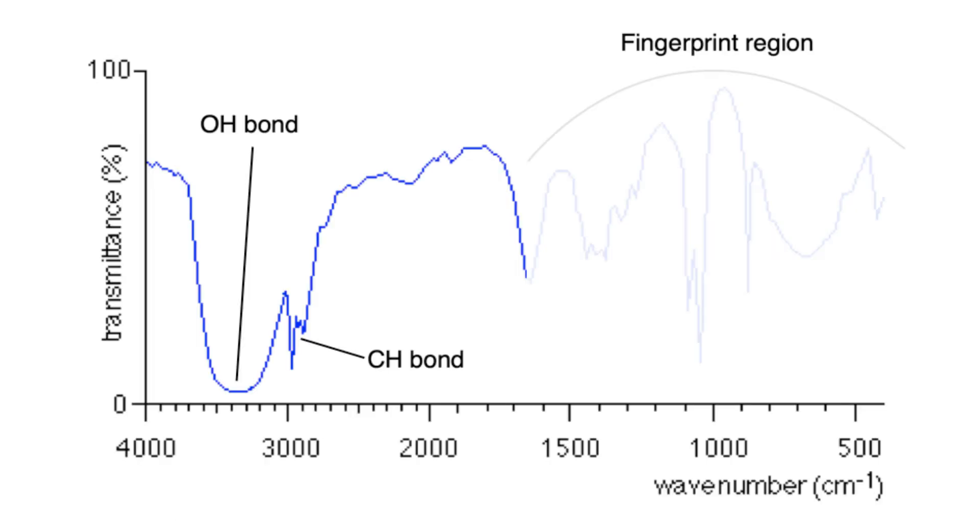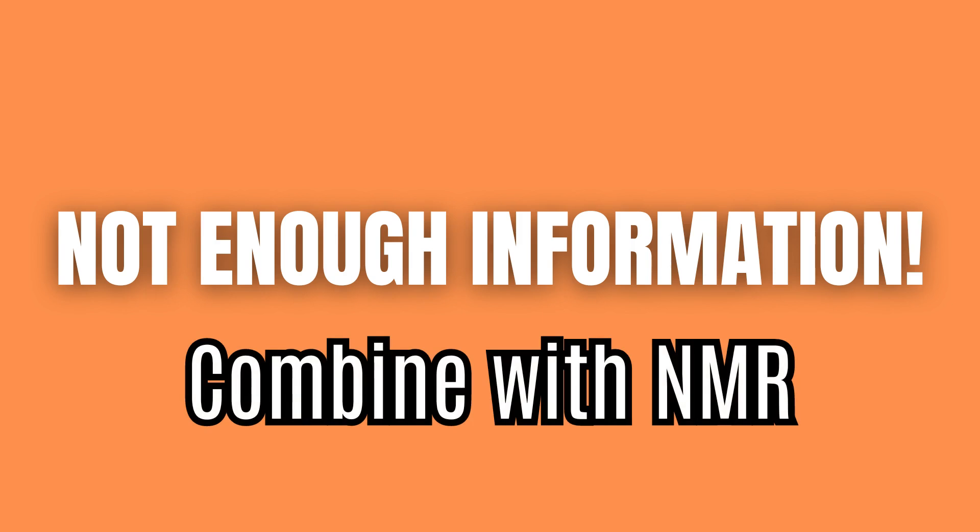Now these two pieces of information alone will not be enough to determine what molecule this is. But if we combine IR spectroscopy with NMR spectroscopy we can determine the functional groups and the carbon skeleton and suddenly determining the type of molecule we are dealing with becomes much easier.